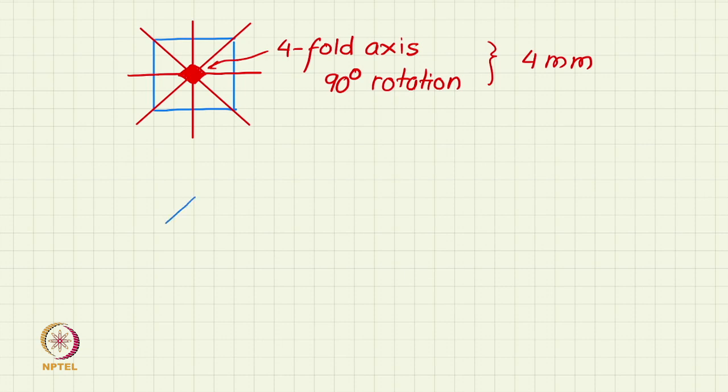Let us take now a three-dimensional example. One of the most symmetric objects in 3D is a cube. Let us look at a cube. Cube is a highly symmetric object and we will explore its symmetry in great detail later. But here you can see that it has many different kinds of rotational symmetries.